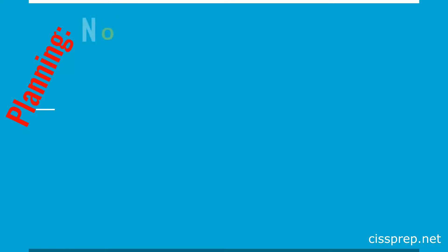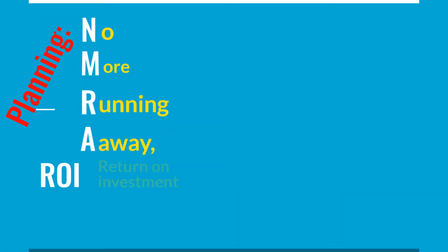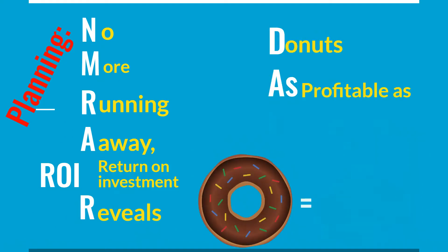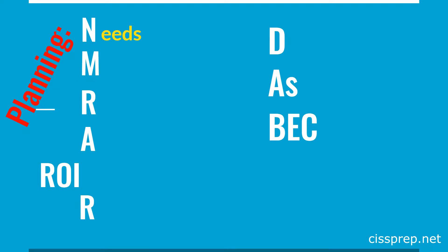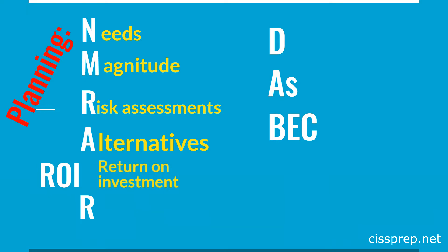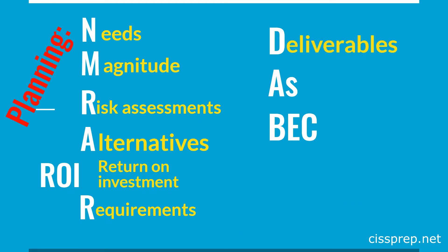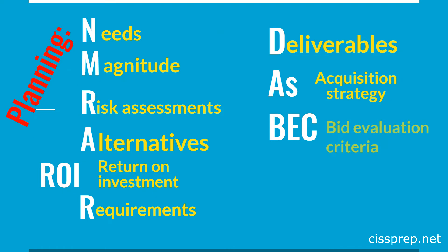For the planning phase, we're going to say the phrase: no more running away, return on investment reveals donuts as profitable as blue egg cheese. This phrase doesn't make a whole lot of sense, but it's goofy enough that you'll remember blue egg cheese. Your actual keywords are: identifying needs, measuring the magnitude of effort for the project, conducting risk assessments on both the project and not-doing-the-project alternatives, ROI for return on investment, R for requirements, D for deciding on contract deliverables, AS for acquisition strategy, and BEC for bid evaluation criteria.